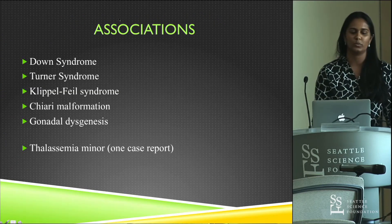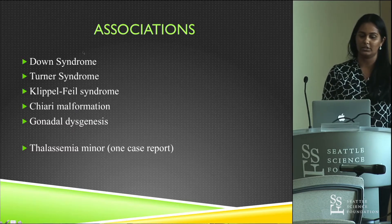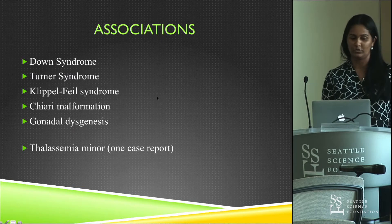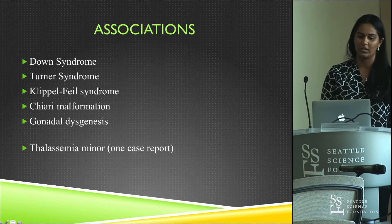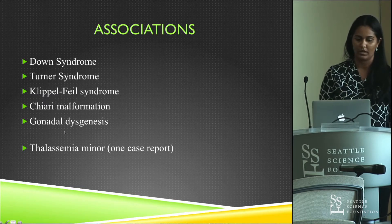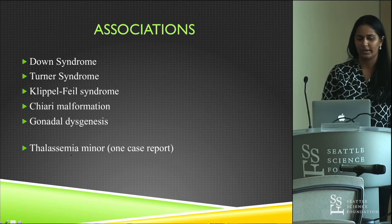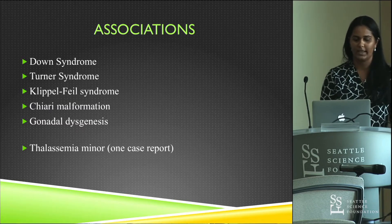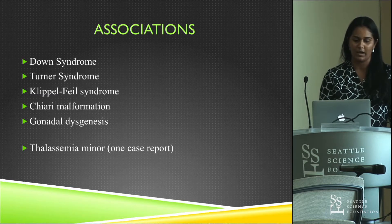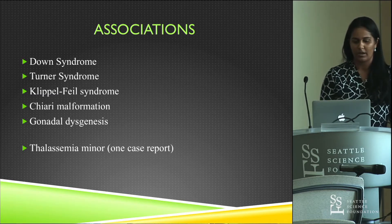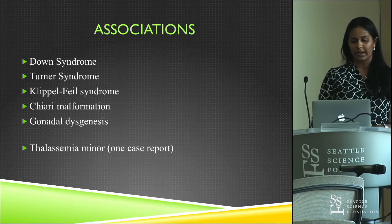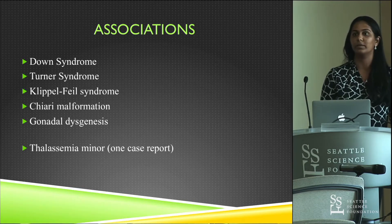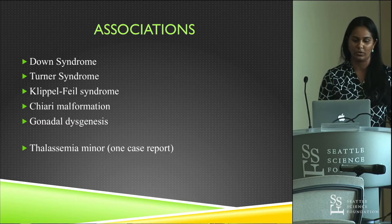There are some associations between split atlas and congenital disorders such as Down syndrome, Turner's syndrome, Klippel-Feil syndrome (fusion of two or more cervical vertebrae), Chiari malformation (herniation of the cerebellum into the foramen magnum), gonadal dysgenesis, and one case report of coexistence with thalassemia minor. The theory is that these conditions impact connective tissue development, causing ligamentous laxity, which allows a greater range of movement in utero and leads to failure of arch fusion.